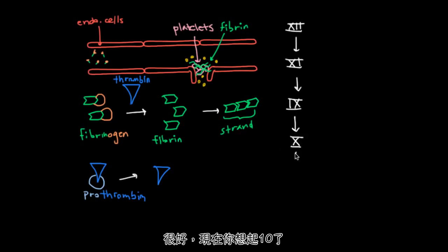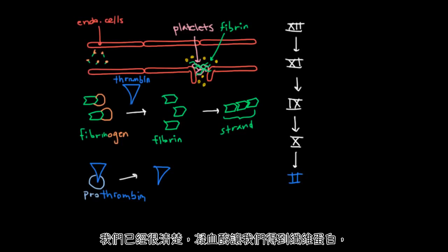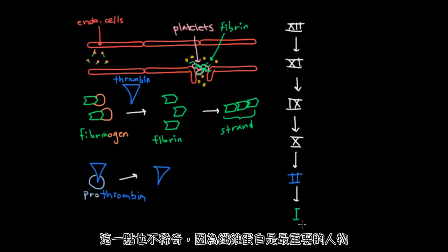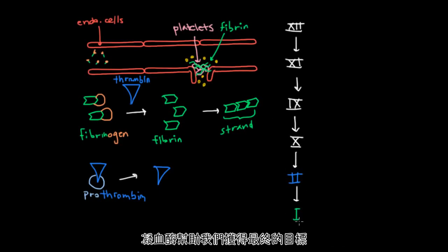Now, it's good that you remember 10, because 10 is a big deal, and he's going to help bring us thrombin. It turns out that thrombin is also known as 2. And we know very well that thrombin helps give us fibrin, which is known as 1. And that's no surprise, because fibrin's the most important guy, he's the ultimate goal, and thrombin is the guy that helps us get the ultimate goal, so he should be number 2.